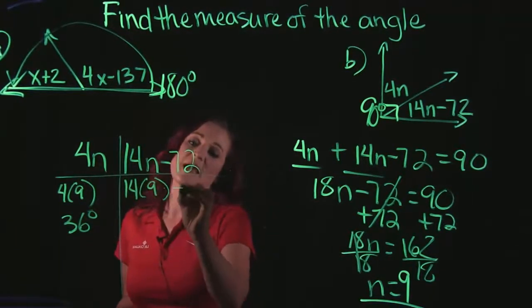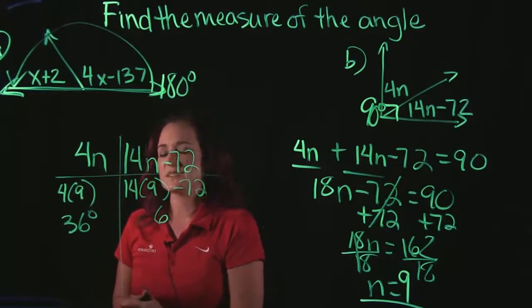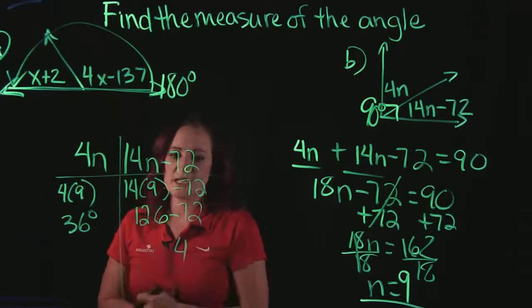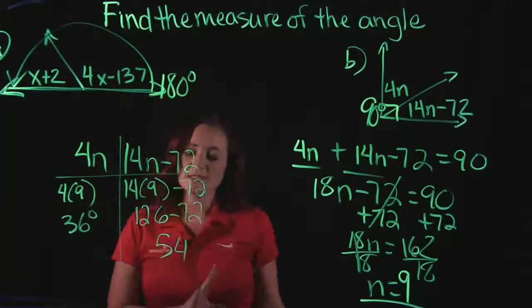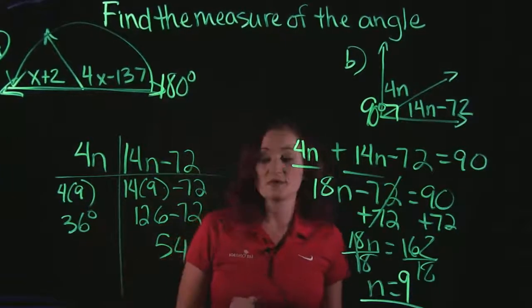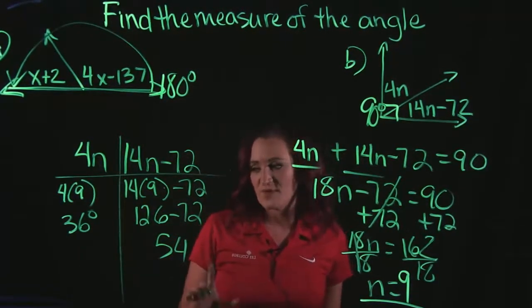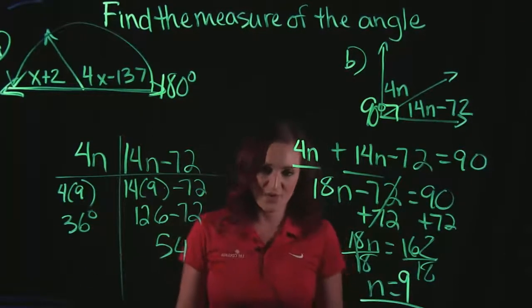Then over here, we're going to say 14 times 9, then minus 72. 14 times 9 is 126, which gives us 54. So that means that one of our angles is 36 degrees. The other angle is 54 degrees. And if we do add those up together, we do see that they do total 90 degrees.